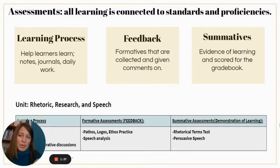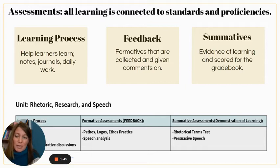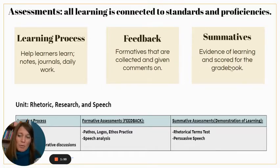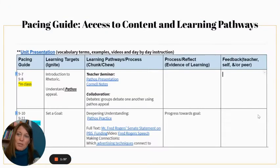Unit guides may vary across content areas, but there are three consistent components. The first is an outline of the different assessments — this includes which activities and content will be part of the learning process, what will be part of the feedback loop or formatives, and what will serve as evidence of learning or count as a summative.